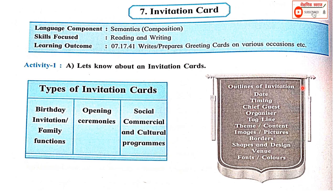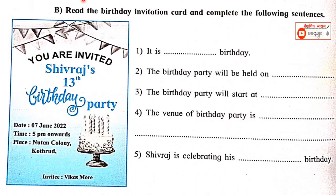The outline of an invitation card includes: date, timing, chief guest, organizer, tagline, theme, oblique content, image or pictures, borders, shape and design, venue, and fonts or colors used in the invitation cards.